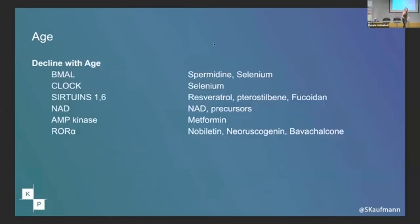I made a list of all the things that decline with age — these are the highlights. BMAL1 goes down, CLOCK goes down, sirtuins go down, NAD goes down, AMPK goes down, and ROR alpha goes down. Unfortunately, this is just true. But on the other side are the hacks — the things that increase these. I know everyone here is interested in hacking this, and you're probably on a variety of these things already. I'm going to point out a few you probably haven't heard of.